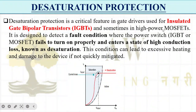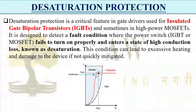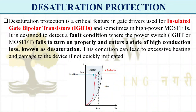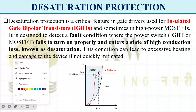After watching this video you can answer why desaturation protection is mostly used for IGBTs and not MOSFETs. This protection is designed to detect fault conditions where the power switch — IGBT or MOSFET — fails to turn on properly and enters a state of high conduction loss known as desaturation. In a faulty condition, the device goes into the desaturation region, causing high conduction losses, which heat up and may damage the device.